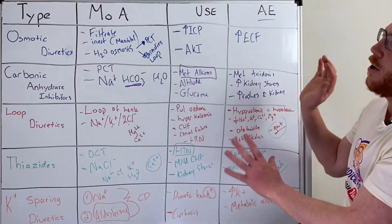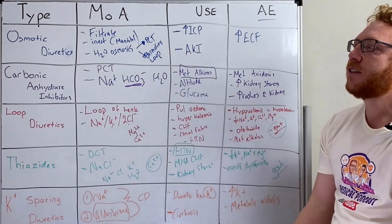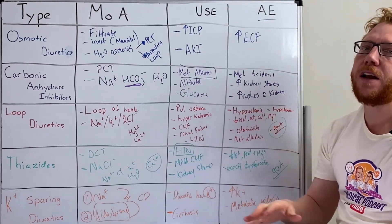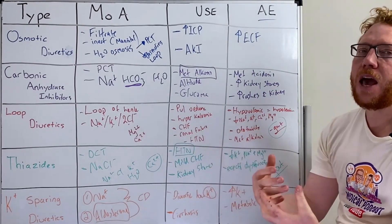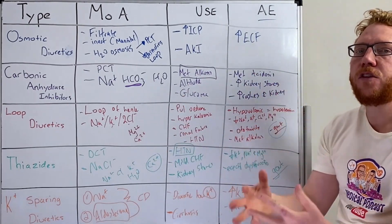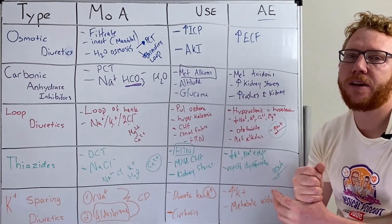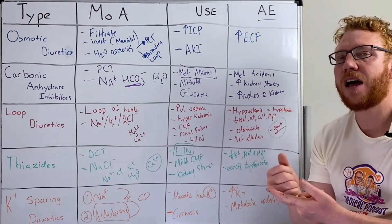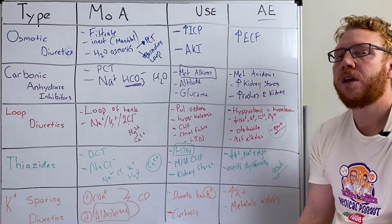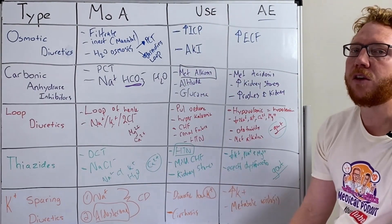So there we have it — there are your five classes of diuretics. We saw how they work, and we can see outside the general uses of diuretics for hypertension, renal failure, and heart failure and edema, some other more specific uses for why they're used and their main side effects.